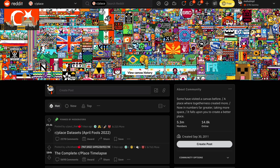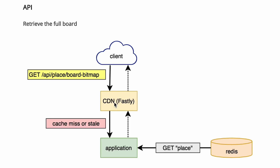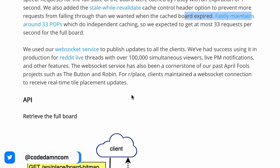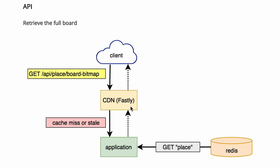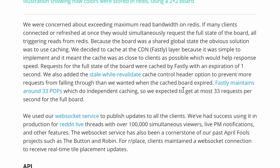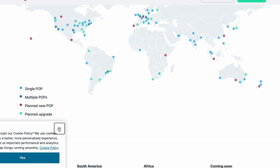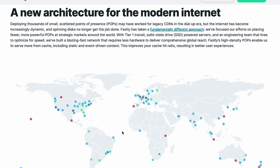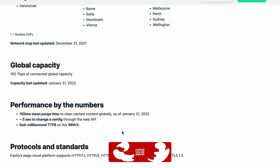When you land on r/place, the first thing your browser does is try to get the board image. That request hits the Fastly CDN before it goes to Reddit's Redis. If the cache is available the CDN returns it. If the cache is stale, Fastly still returns it because they are using the stale-while-revalidate cache-control header. So at max, if configured for one second of stale-while-revalidation, Fastly — which maintains around 33 CDN points of presence — only needs to refresh once per second per node.